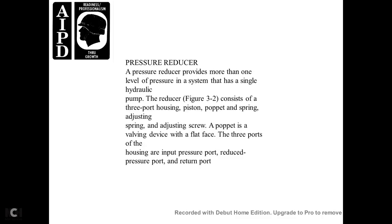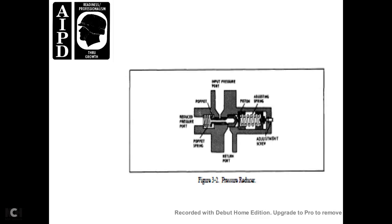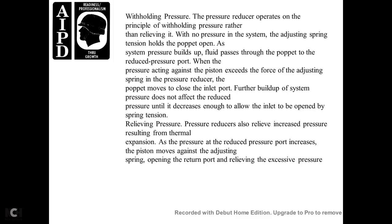Pressure Reducer. A pressure reducer provides more than one level of pressure in a system with a single hydraulic pump. The reducer has a three-port housing, piston, poppet, springs, and adjusting screw. The poppet is a valve device with a flat face. The three ports are input pressure port, reduced pressure port, and return port. The pressure reducer operates on the principle of withholding pressure rather than relieving it. With no pressure in the system, the adjusting spring tension holds the poppet open. As the system produces fluid and builds up pressure, the reduced pressure acts against the piston. As pressure proceeds against the force of the adjusting spring, the pressure with the poppet moves to close the inlet port. Further build-up of system pressure does not affect the reduced pressure until it decreases enough to allow the inlet to be reopened. The pressure reducer also reduces pressure increases resulting from thermal expansion — as reduced-port pressure increases, the piston moves against the adjusting spring, opening the return port and relieving the excessive pressure.